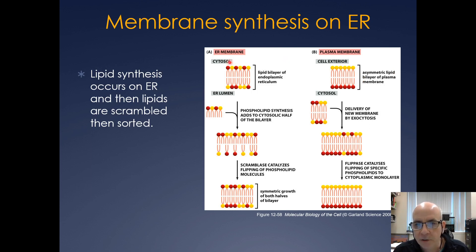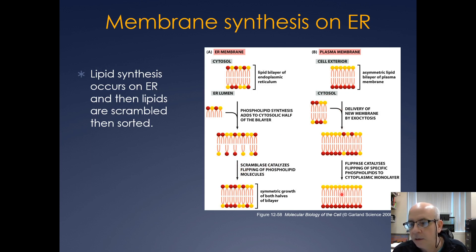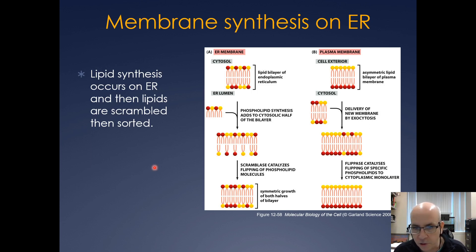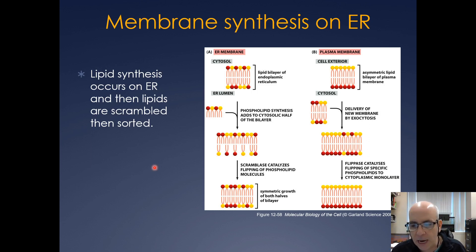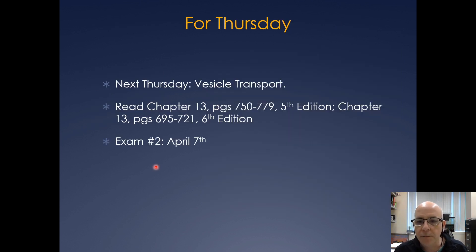Once lipids are made on the cytosolic face of the ER membrane, they get sorted and flipped. A protein called scramblase can move and flip the lipids around, and an enzyme called flippase on the plasma membrane can also flip and sort lipids. This relates back to the lipid subdomains and leaflet-specific lipid compositions we covered previously.